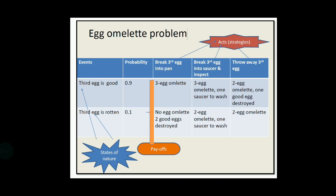If you throw away the third egg without inspection but it was actually good, you make only a two-egg omelet and one good egg is destroyed. Now, if the third egg is rotten and you break it directly into the pan, the entire omelet is spoiled — no omelet at all. If you break it into a saucer and inspect, you make a two-egg omelet with one saucer to wash. If you throw it away without inspection, you still get a two-egg omelet.